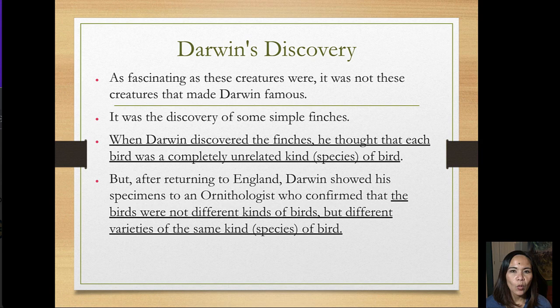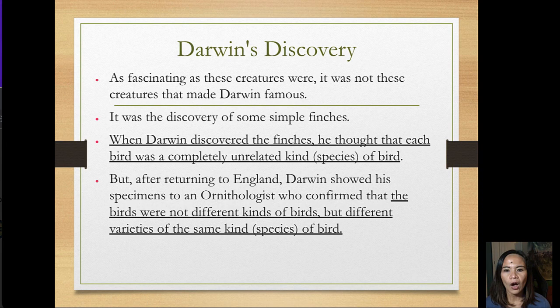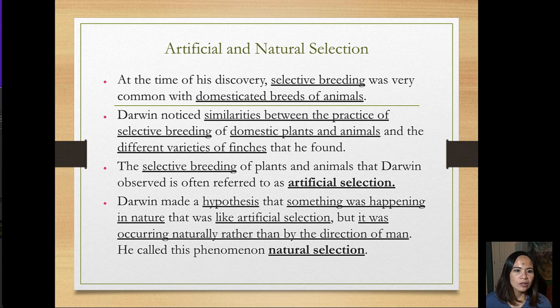According to Darwin's observations, as fascinating as these creatures were, it was not these creatures that made Darwin famous. In fact, it was his discovery of some simple finches. When Darwin discovered these finches, he thought each bird was a completely unrelated kind of species, but after returning to England, Darwin showed his specimens to an ornithologist who confirmed the birds were not different kinds but different varieties of the same species.